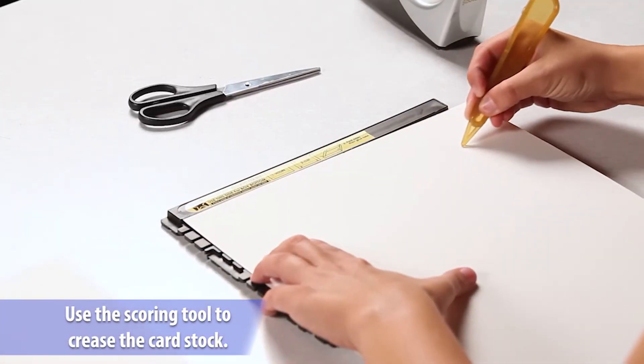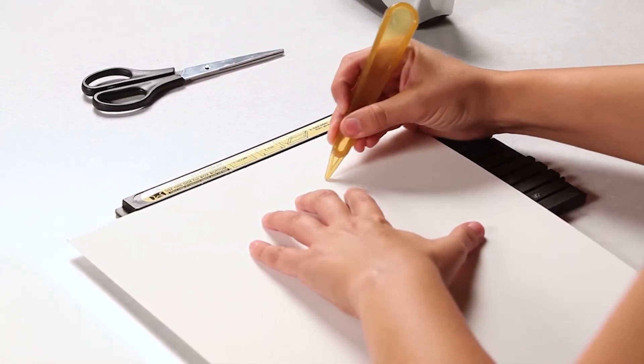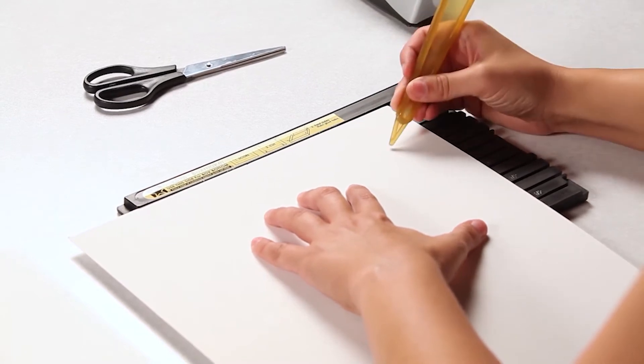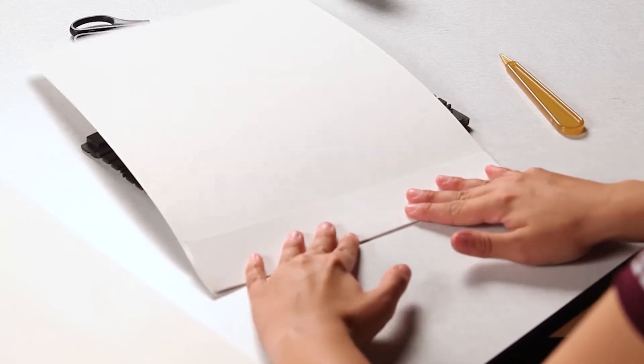When using the scoring tool, it is important to press hard enough to crease the cardstock, but not so hard that you poke through or damage the cardstock. Once creased, the cardstock can easily be folded along the crease.